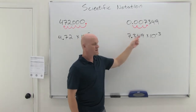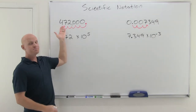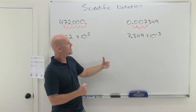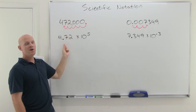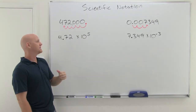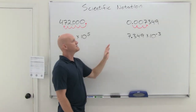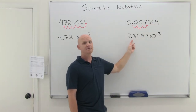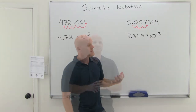These are equivalent expressions for the same number. If you've got a number much bigger than 1, positive powers of 10. A number much smaller than 1, negative powers of 10. Another way to look at this: if you're taking 472,000 and making the number smaller to a coefficient of 4.72, then you better have a very large power of 10 to make up for it, because it's got to be the same number. So if your number part gets smaller, your power of 10 better get bigger. Same thing over here — we made 0.007349 get bigger to 7.349, so if the number gets bigger, your power of 10 better get smaller.